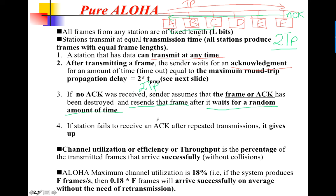If a station fails to receive an acknowledgement after repeated transmissions, it will try to send the same frame again and again, up to 15 times (K_max = 15). If after 15 attempts it still does not receive an acknowledgement, it will give up and try again at some later time.